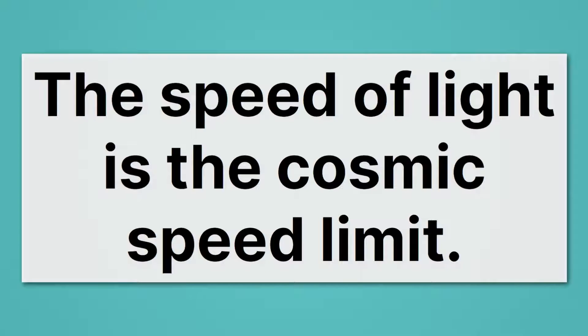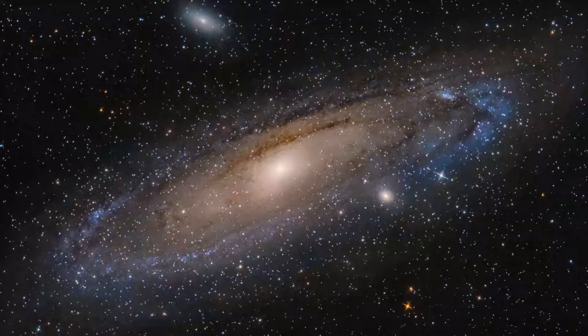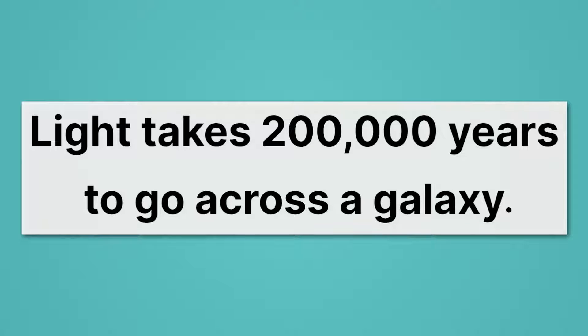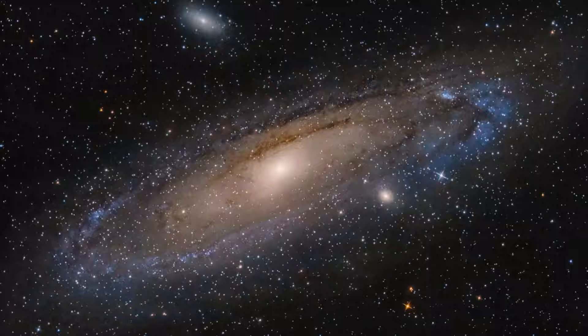And the speed of light turns out to be a speed limit of sorts. The speed of light is the cosmic speed limit. We can't actually go faster than the speed of light. And that's actually kind of a bummer because the universe is really big. Here's the Andromeda galaxy. Let's say we want to travel from one end to the other, and let's say we go as fast as we possibly can, the speed of light. It turns out it will still take us 200,000 years to get across the galaxy.